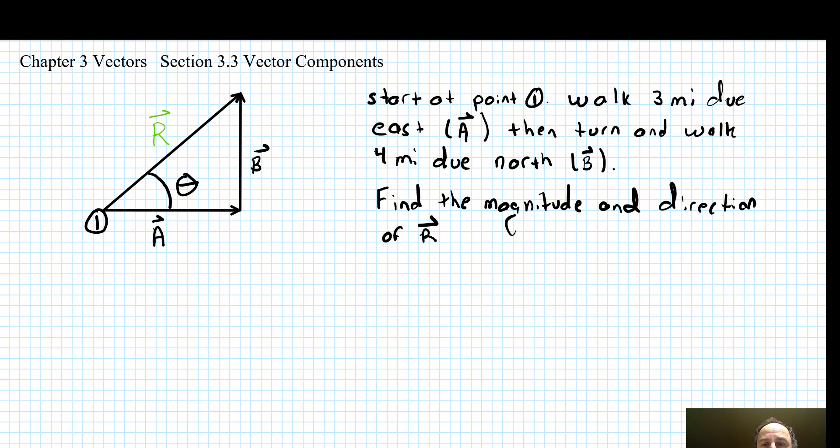You started at point 1, walked 3 miles due east, which is represented by vector a in the diagram. Then you turned and walked 4 miles due north, which is vector b in the diagram. The question asks you to find the magnitude and direction of the resultant vector from point 1 to the arrowhead of b.